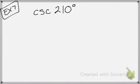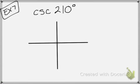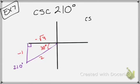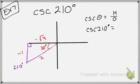Cosecant of 210 degrees. I know that 210 falls in quadrant 3. Drop your right angle like this, and my reference angle is 30, so negative 1, 2, negative root 3. My ratio for cosecant is hypotenuse over opposite. So the cosecant of 210 degrees is negative 2.